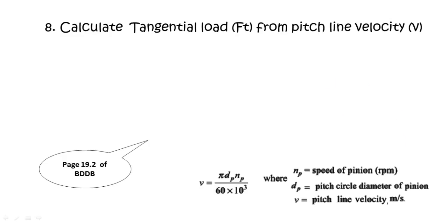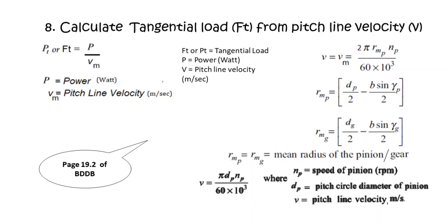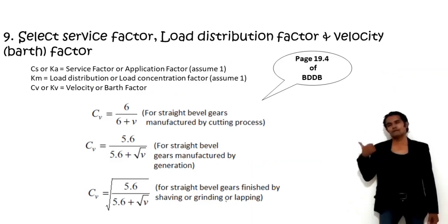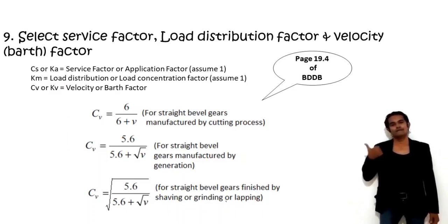Step 8: Calculate tangential load. First calculate the mean radius of pinion: RMP = DP/2 − (B × sin(γP))/2, and similarly RMG. Then pitch line velocity V = 2π × RMP × NP / (60 × 10³), or directly V = π × DP × NP / 60,000. Tangential load PT = Power / V. For service factor and load distribution factor, assume 1 if not given. For the Barth factor, if nothing is specified, use 5.6 / (5.6 + √V) for straight bevel gears manufactured by generation. Formulas are on page 19.4 of the Bhandari design data book.